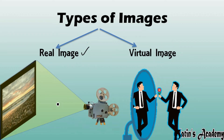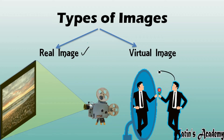But in a virtual image, for example when you are standing in front of a plane mirror, the light rays are not actually meeting on the mirror — they are meeting behind the mirror. That is why we see our image behind the mirror, not on the mirror. Whenever we move back, the image also moves back. The image formed behind the screen is a virtual image.